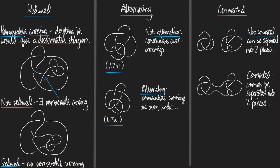Now let's move on to the definition of connected. The first diagram here is not connected because I can draw a circle inside the plane that doesn't meet the diagram but that contains some part of the diagram inside it and some part still outside — this curve separates the diagram into two pieces. On the other hand, the next diagram is connected: there is no way to draw a curve in the plane that separates it into two pieces. Equivalently, if I start on the diagram I can get anywhere else on the diagram by traveling around it, possibly turning corners at crossings.